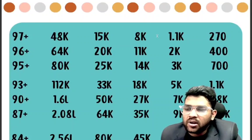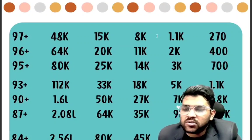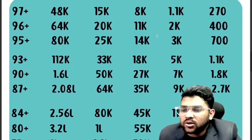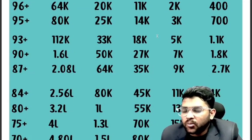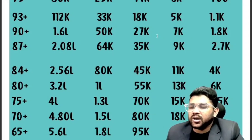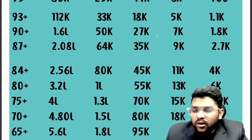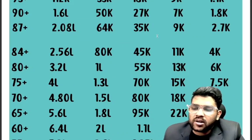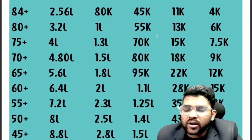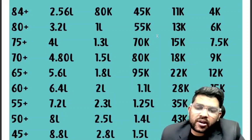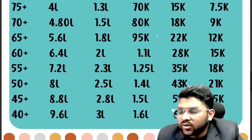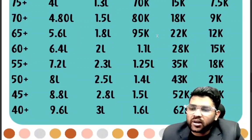For 90 percentile: general rank 1.6 lakh; OBC 50,000. For 87: general 2.8 lakh; OBC 64,000. For 84: general 2,56,000; OBC 80,000. For 80: general 3.2 lakh; OBC 1 lakh. For 75: general 4 lakh; OBC 1.3 lakh. For 70: general 4.80 lakh; OBC 1.5 lakh. For 65: general 5.6 lakh; OBC 1.8 lakh. For 60: general 6.4 lakh; OBC 2 lakh. For 55: general 7.2 lakh; OBC 2.3 lakh; EWS 1.25 lakh; SC 35,000; ST 18,000. For 50: general 8 lakh; OBC 2.5 lakh. For 45: general 8.8 lakh; OBC 2.8 lakh. For 40: general 9.6 lakh; OBC 3 lakh.